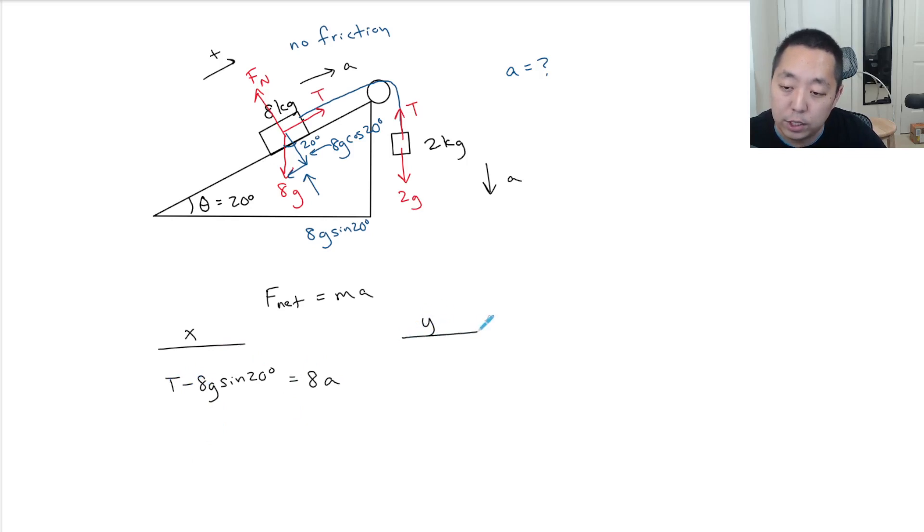And then the y direction is not as important or useful in this problem, but the net force in the y direction is zero because it's not accelerating perpendicular to the ramp. So we would say the net force is zero. Or in other words we would say Fn has to equal 8g cosine 20 degrees.